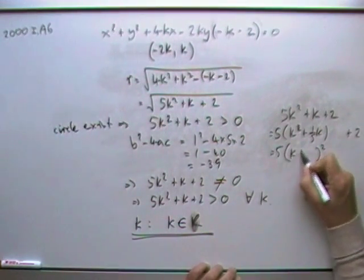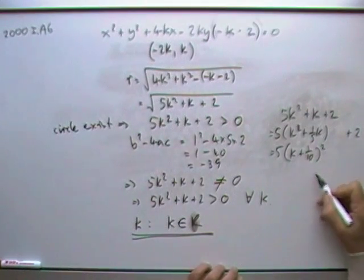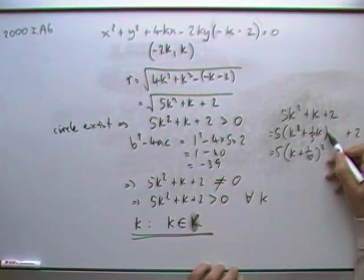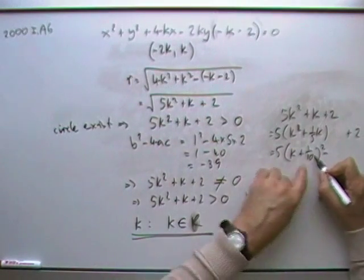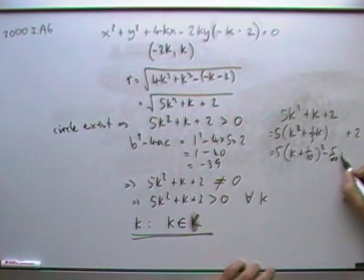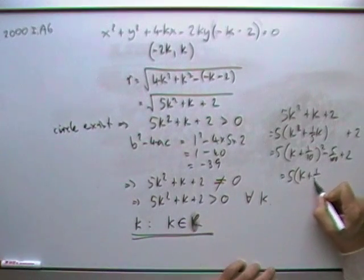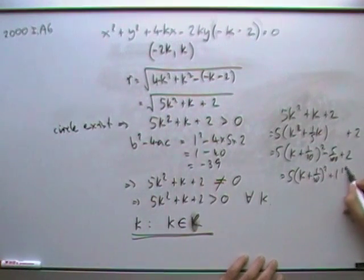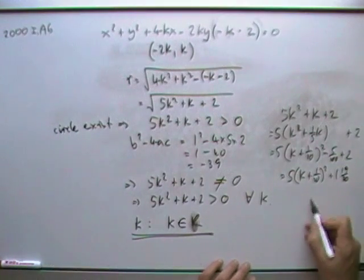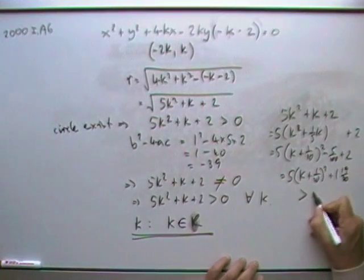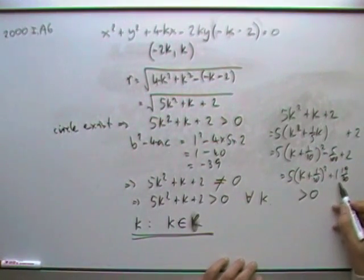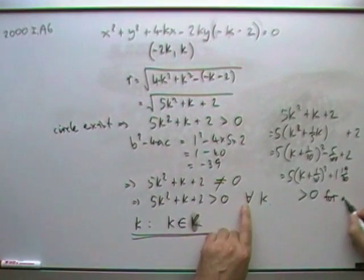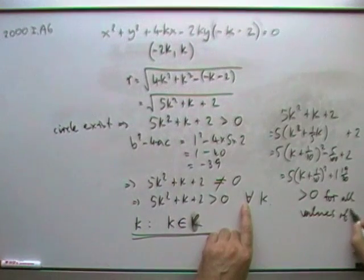Complete that part, so that'd be k plus a half of that, k plus a tenth, thereby adding in an extra square of the last, adding in an extra hundredth. So take away 5 of those hundredths, plus 2, so you've got 5 times k plus a tenth squared, that's a twentieth, so plus 1 and 19 twentieths. And then you could say that's obviously greater than zero, or in fact it's greater than or equal to 1 and 19 twentieths for all values of k.